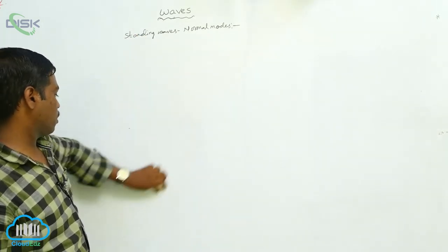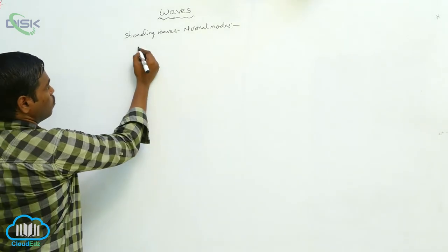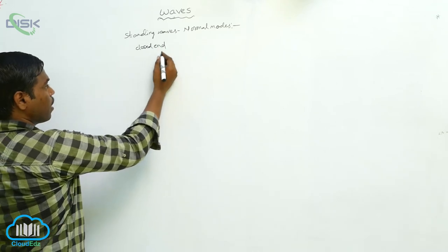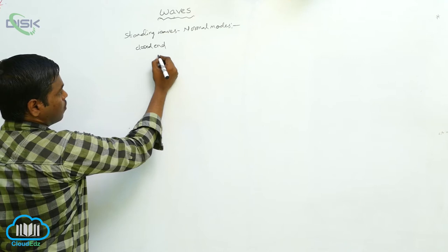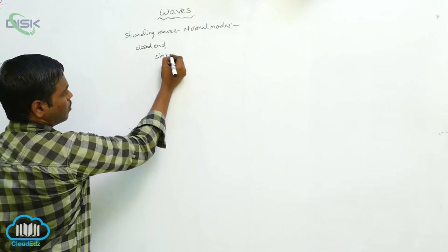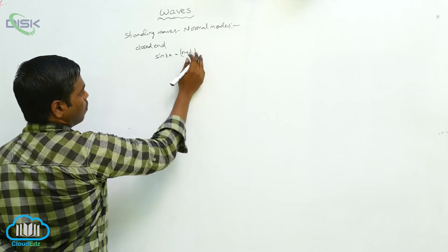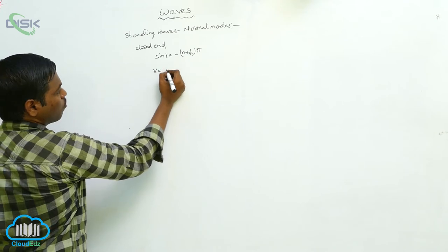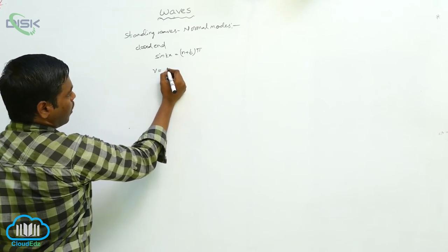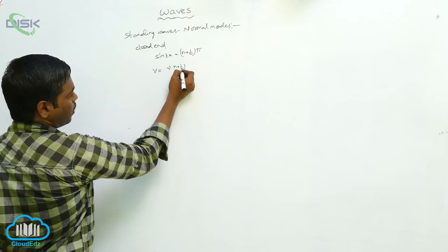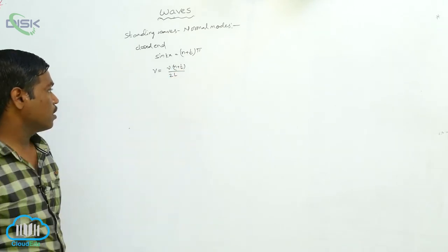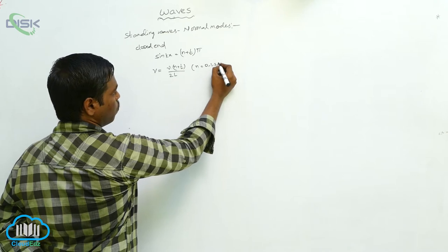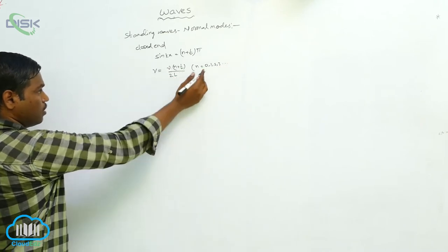For the closed end, the standing waves produced depend on the condition that sin(kx) = 0 at x = (l + 1/2)·(π/k), from which we can derive the frequency formula: ν = (n + 1/2)·v / 2L, where n = 0, 1, 2, 3, and so on.